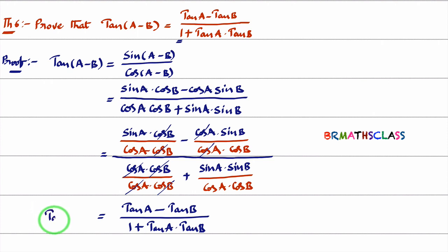So, tan of A minus B. What is the formula for tan of A minus B? tan A minus tan B divided by 1 plus tan A tan B.